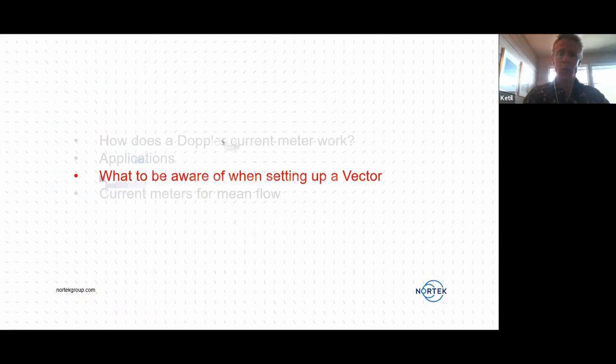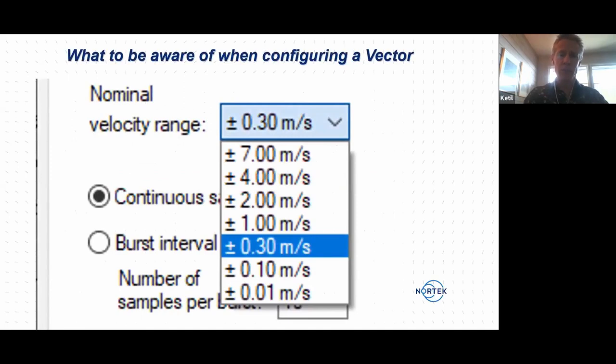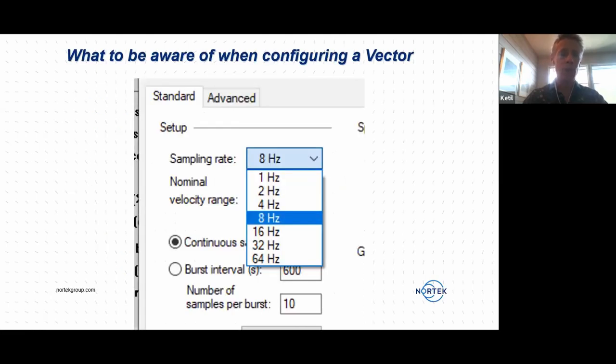So we talked a little bit about what to be aware of when setting up the vector. Remember that the instrument measures with pulse pairs measuring the phase shifts between the first and the second pulse in the pulse pair. So we have to set up the velocity range prior to the measurements in order to keep that time difference between the pulses to the proper level.